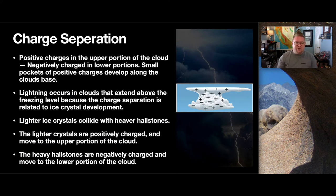So, the first one is the charge separation. Positive charge is in the upper portion of the cloud, and then we find that negatively charged ions are in the lower portion of the clouds. And then often there are small pockets of positively charged development along the base of the cloud. Lightning occurs in the cloud that extend only above the freezing level, because the freezing level of that cloud or the ice crystal's development is part of that charge separation. Lighter ice crystals will collide with heavier hailstones. These lighter crystals are positively charged and will move upward in the cloud. But when they start to impact the larger hailstones, the hailstones are negatively charged and much larger, and they will move to the lower portion of the cloud. And so, because of those meetings, we now have a separation of dominance of positive and negatively charged ions.